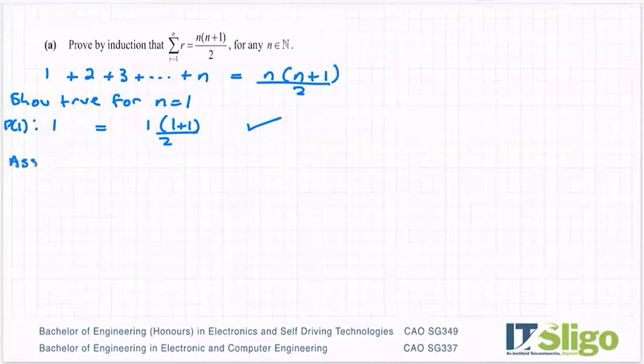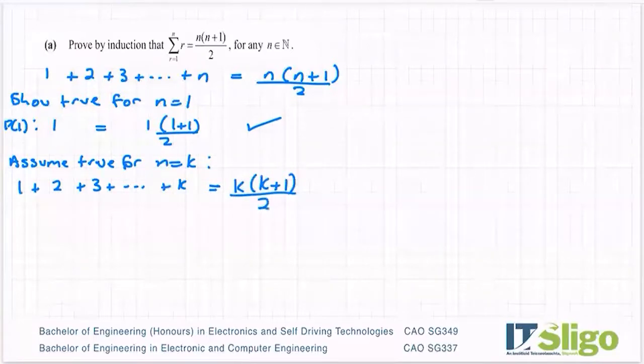Then we assume true for n is equal to k. So in other words, n takes on the value k. So what does that look like on the left hand side? 1 plus 2 plus 3 plus dot dot dot up to k is equal to, and then on the right hand side, n assumes the value k. So that just means you sub in that letter k anytime you see n.